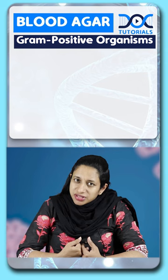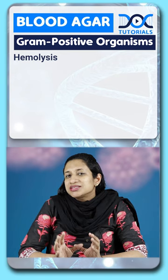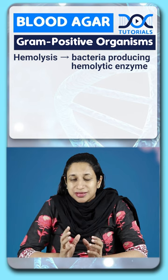One of the important media that you use for isolation of organisms is blood agar. When we are talking about gram-positive organisms, we always describe what is known as hemolysis. Hemolysis is something produced by bacteria which produce hemolytic enzymes, and this is something that you have to keep in mind when you are isolating the organism.